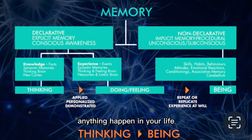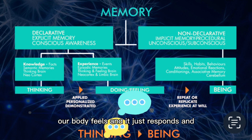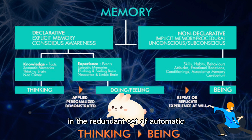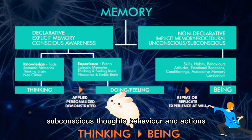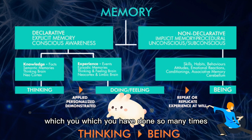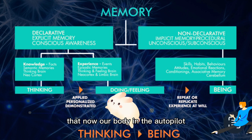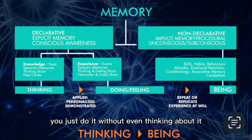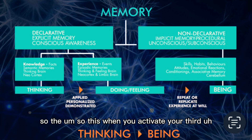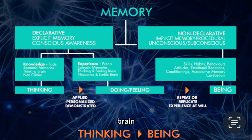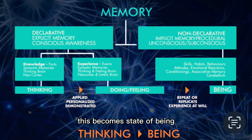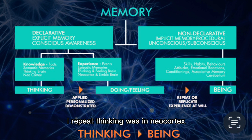When anything happens in our life, our body feels it and just responds — our body just behaves according to habits, which are a redundant set of automatic subconscious thoughts, behaviors, and actions done so many times that our body is on autopilot. Your body knows better than your mind and you just do it without even thinking about it. This is when you activate your third brain — the cerebellum — and condition your body to your new mind.